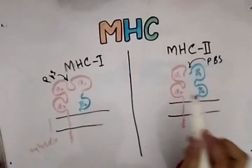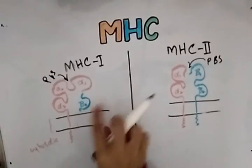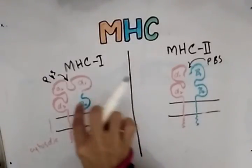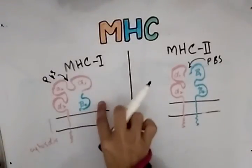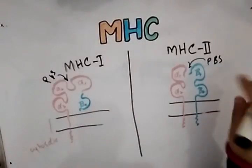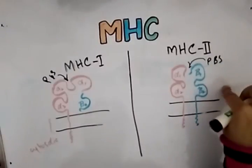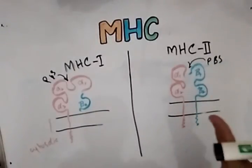The main structural difference is that in the MHC1 complex, the alpha chain is longer than the beta chain, while in MHC2, the alpha chain and beta chain are of similar length.